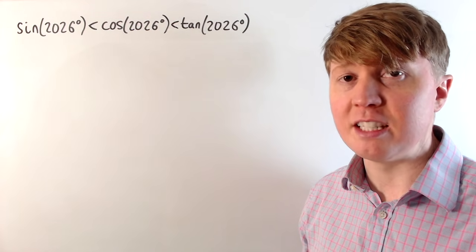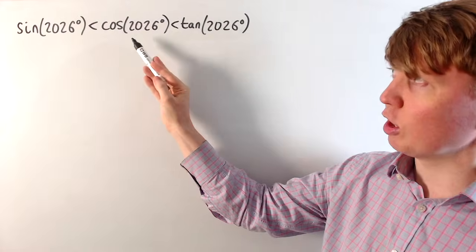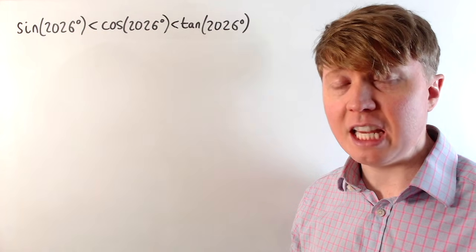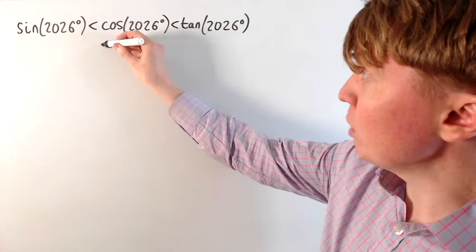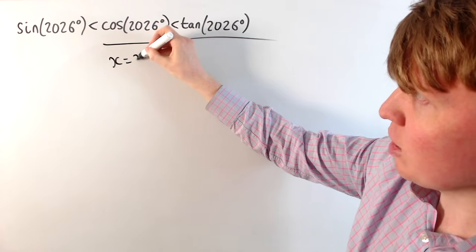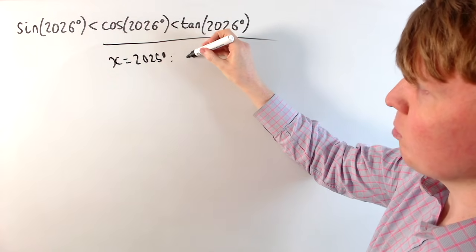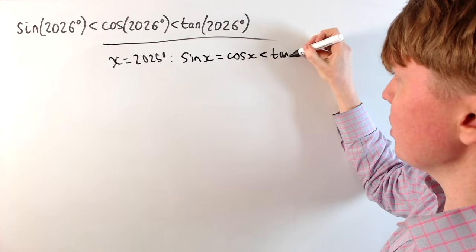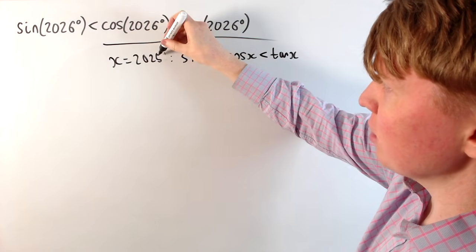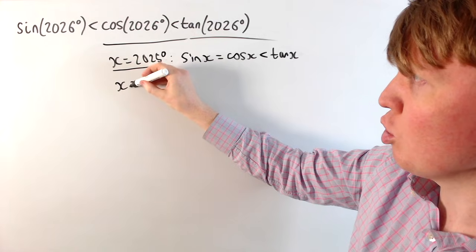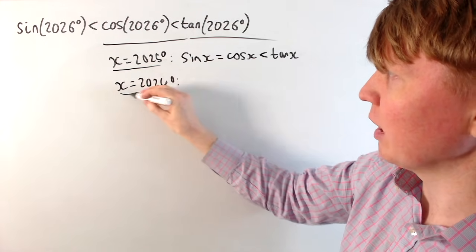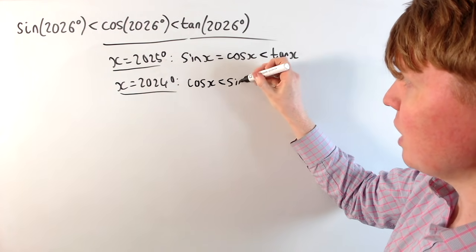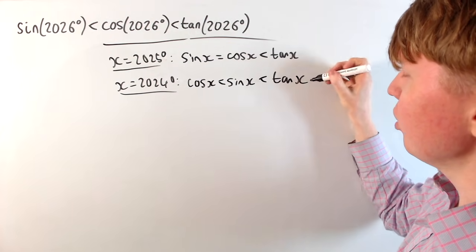At the moment, in 2026, thinking about this in degrees, we've got sine of 2026 is less than cos is less than tan of 2026. And considering the years as just being integers, this has only just changed, because back in 2025, we actually had sine and cos were equal to each other, and tan was still the biggest. This changed as well in 2025, because if we go back to 2024, we had cosx was the smallest with sine in the middle, and tan was the biggest.